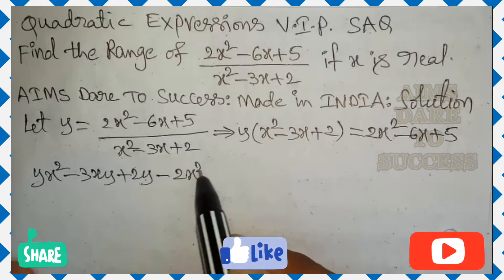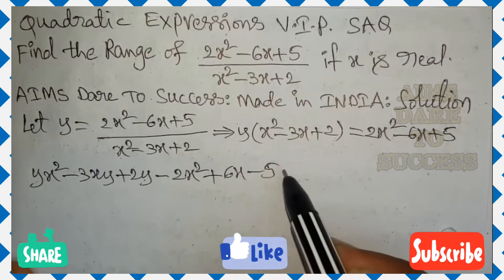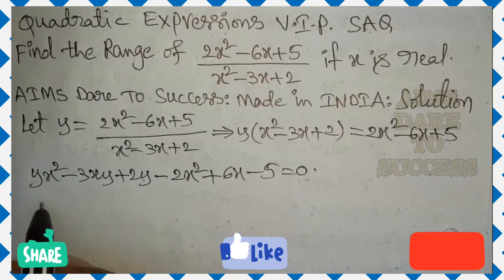All right side values coming into left side. We get minus 2x square plus 6x minus 5 is equals to 0. Next,